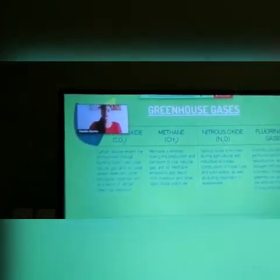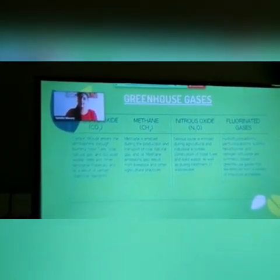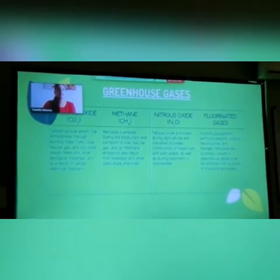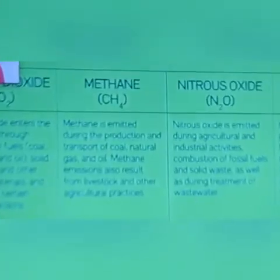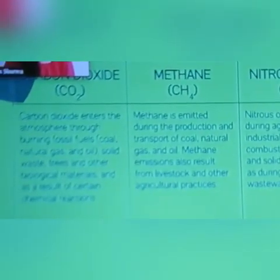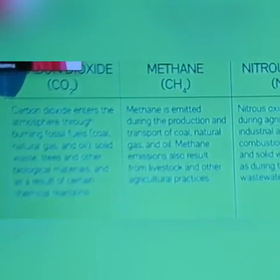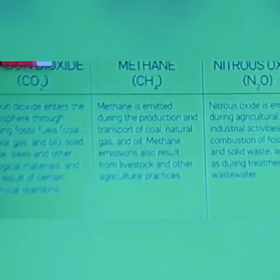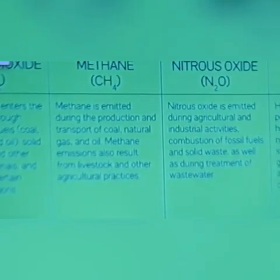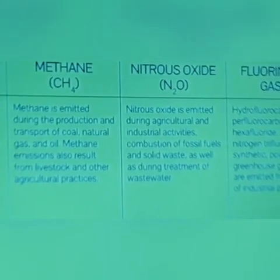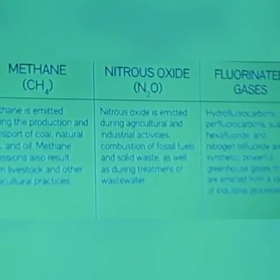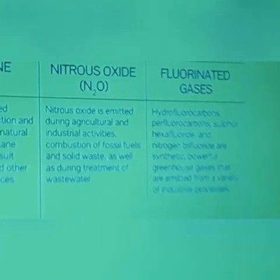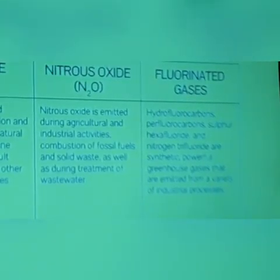There are four main greenhouse gases: carbon dioxide, methane, nitrous oxide, and fluorinated gases. Carbon dioxide enters the atmosphere through burning fossil fuels, solid waste, and trees. Methane is emitted in the production and transport of coal, natural gas, and oil. Nitrous oxide is emitted during agricultural and industrial activities and combustion of fossil fuels. Hydrofluorocarbons and other powerful greenhouse gases emitted from a variety of industrial processes constitute the fluorinated gases.